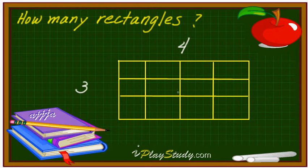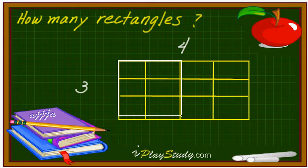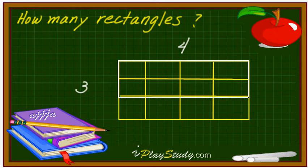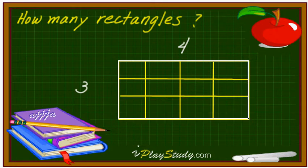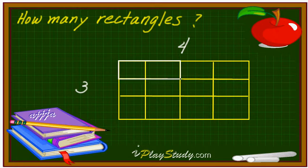But you can see more than that. Actually, what about this one? Rectangle like this, or like that, or like this, or like that, or this big, or the whole thing — the biggest one. That's right. So we have to be careful on counting.